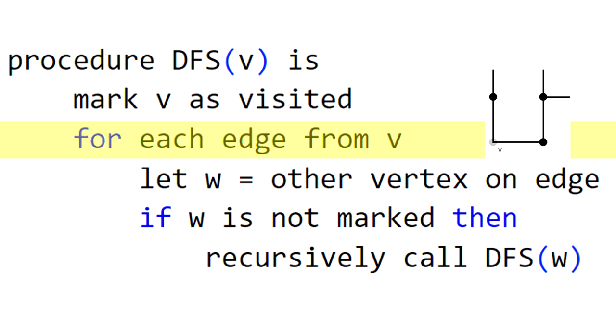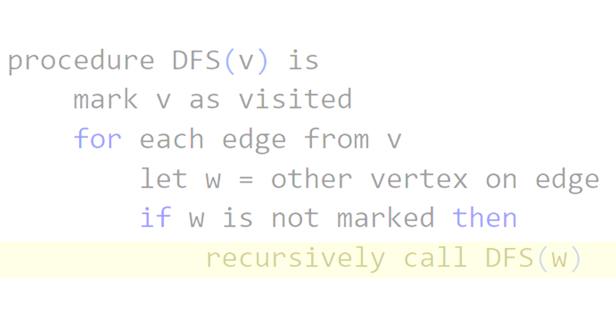Now we form a list of all the edges coming out of V. These are the choices our cat has to explore. For each of the edges, we'll use W as a way to refer to the vertex the edge goes to. We only care about this new vertex W if we haven't seen it yet. So if it's new to us, then we just rerun DFS, but this time with W as the starting vertex. That's it!